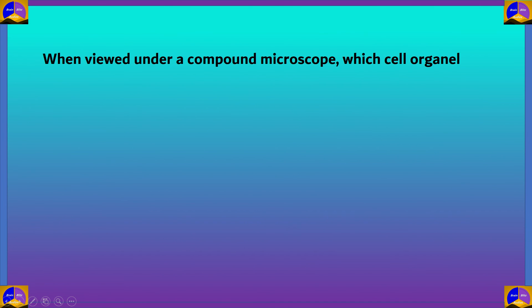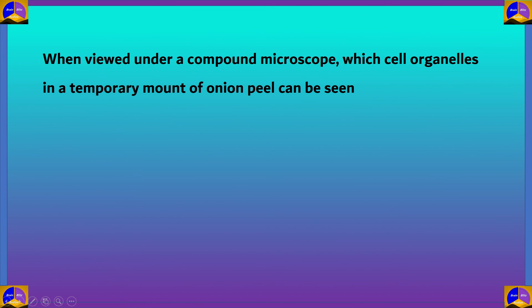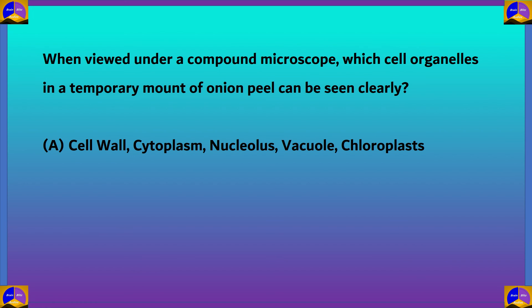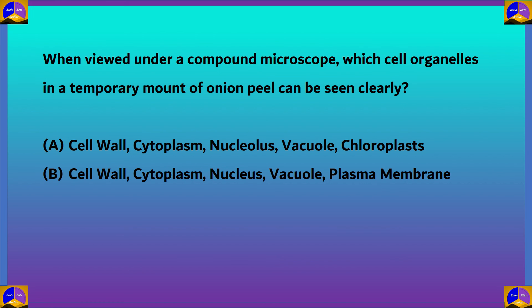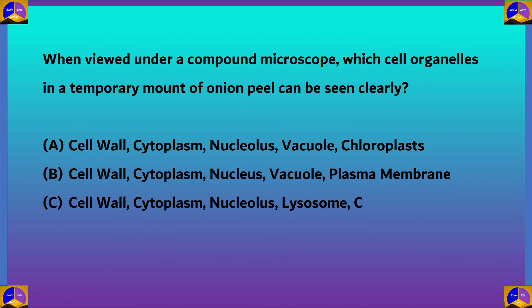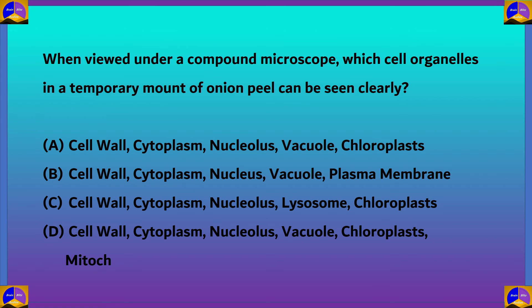Next question: when viewed under a compound microscope, which cell organelles in a temporary mount of onion peel can be seen clearly? Option A: cell wall, cytoplasm, nucleolus, vacuole, chloroplast. Option B: cell wall, cytoplasm, nucleus, vacuole, plasma membrane. Option C: cell wall, cytoplasm, nucleolus, lysosome, chloroplast. Option D: cell wall, cytoplasm, nucleolus, vacuole, chloroplast, and mitochondria.